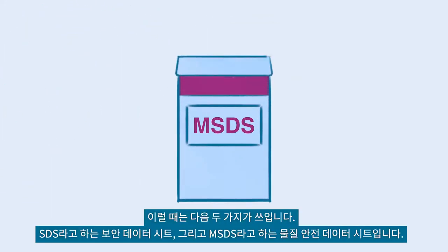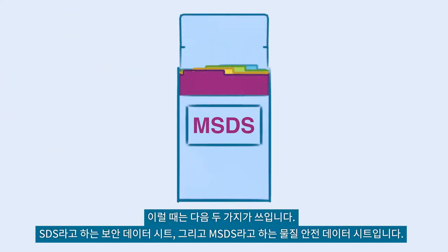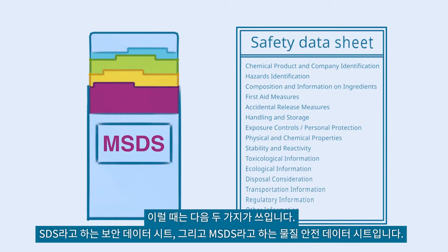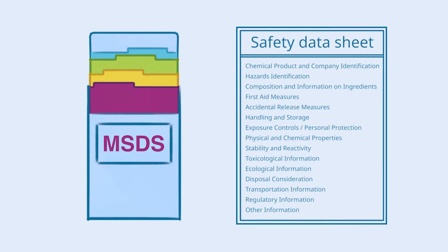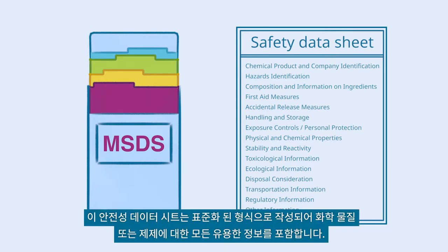In this regard, Safety Data Sheets, also known as Materials Safety Data Sheets, are the key source of information. Compiled in a standardized format, these Safety Data Sheets contain all kinds of helpful information about the chemical substance or formulation.